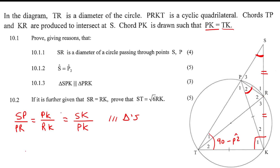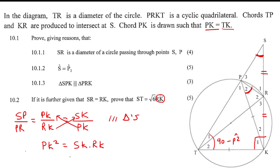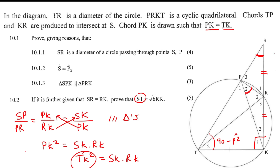Now they tell us SR equals RK. Using the first and last ratios and cross-multiplying, we end up with PK squared equals SK times RK. Now PK is the same as TK, so we can replace PK squared with TK squared. Since we want ST and we have a 90-degree triangle, I'm thinking of Pythagoras: TK squared plus SK squared equals ST squared.